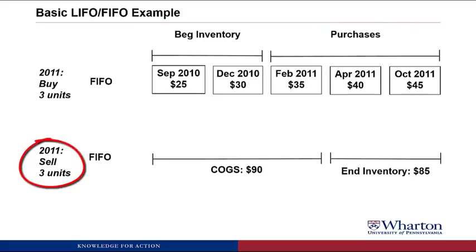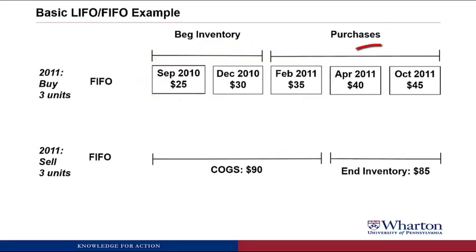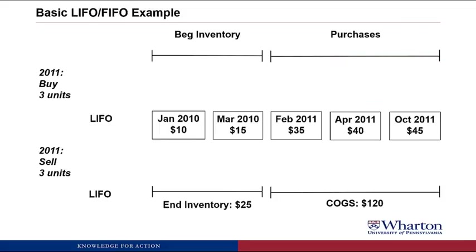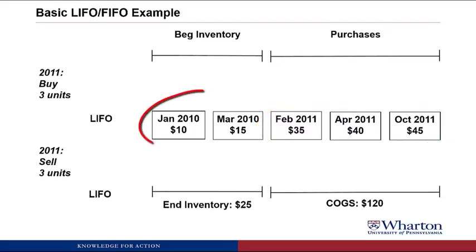We sell three units during 2011. Under FIFO, to figure out Cost of Goods Sold we start with the oldest costs and move forward. So COGS equals $25 plus $30 plus $35, giving $90. Ending inventory is the newest costs: $40 plus $45 gives $85. Under LIFO, we start with the newest costs and work back. Cost of Goods Sold would be $45 plus $40 plus $35, which is $120. Ending inventory is the oldest costs — $10 plus $15 — giving us ending inventory of $25.